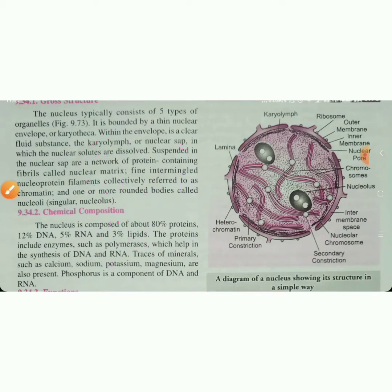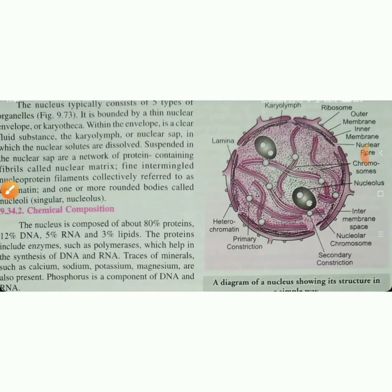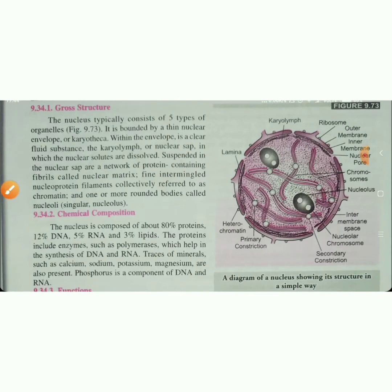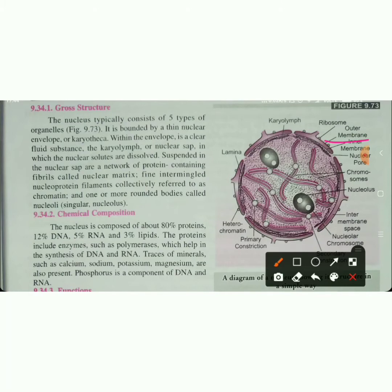Now we have a diagram of the nucleus. Let's see the diagram. In the nucleus there are two membranes — an outer membrane and an inner membrane. On the outer membrane you can see ribosomes.